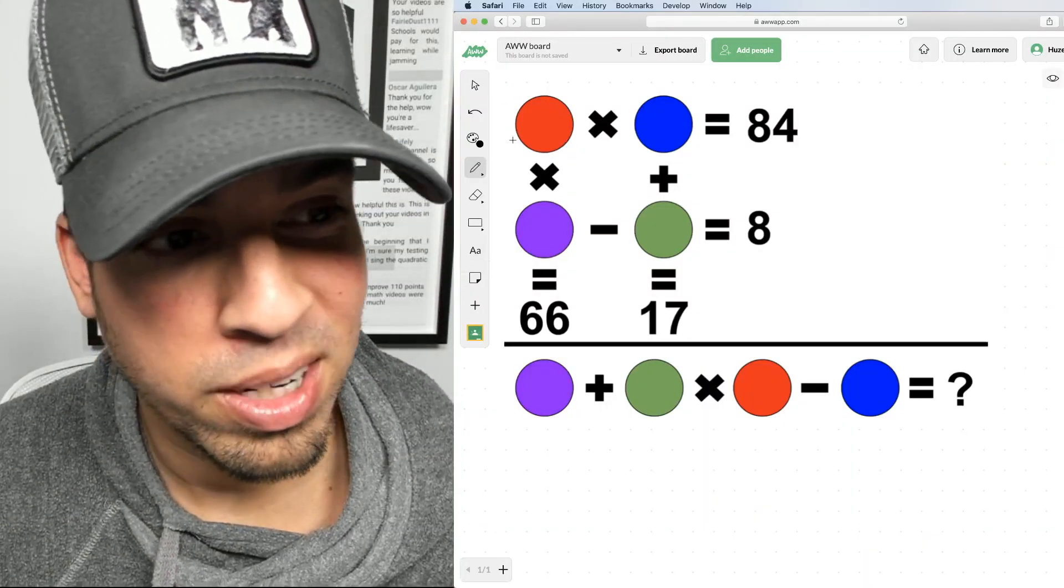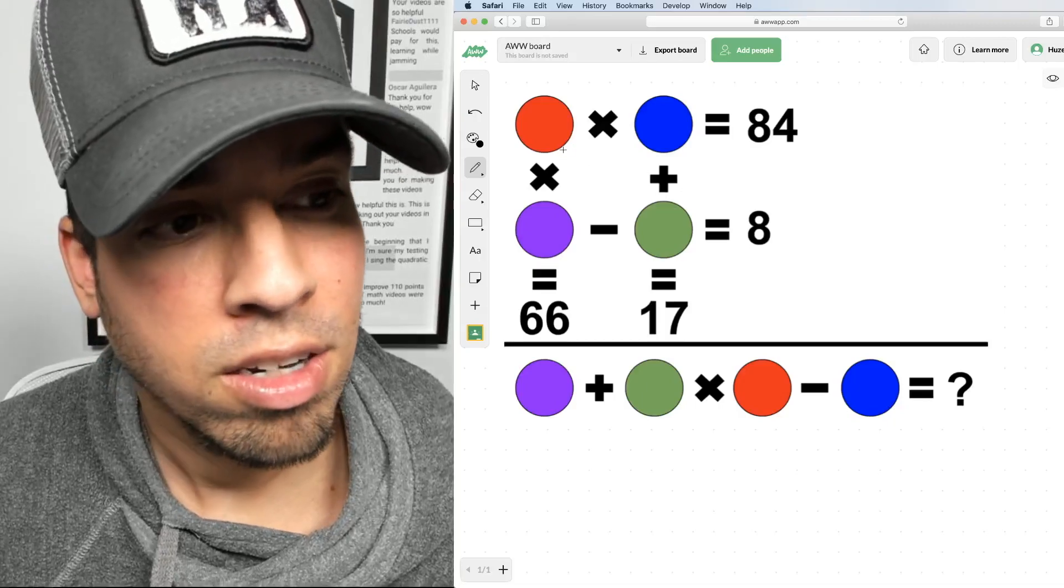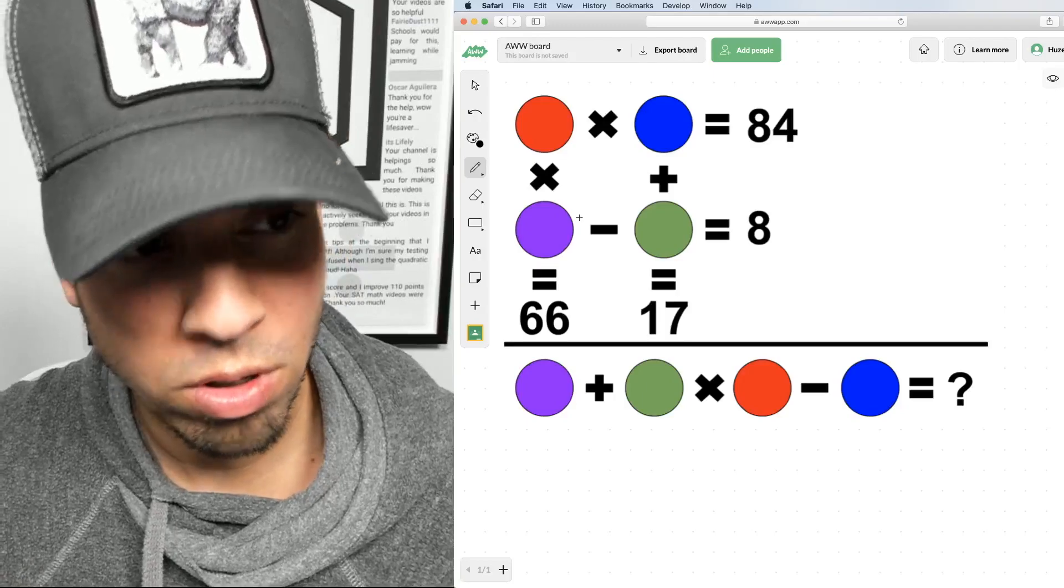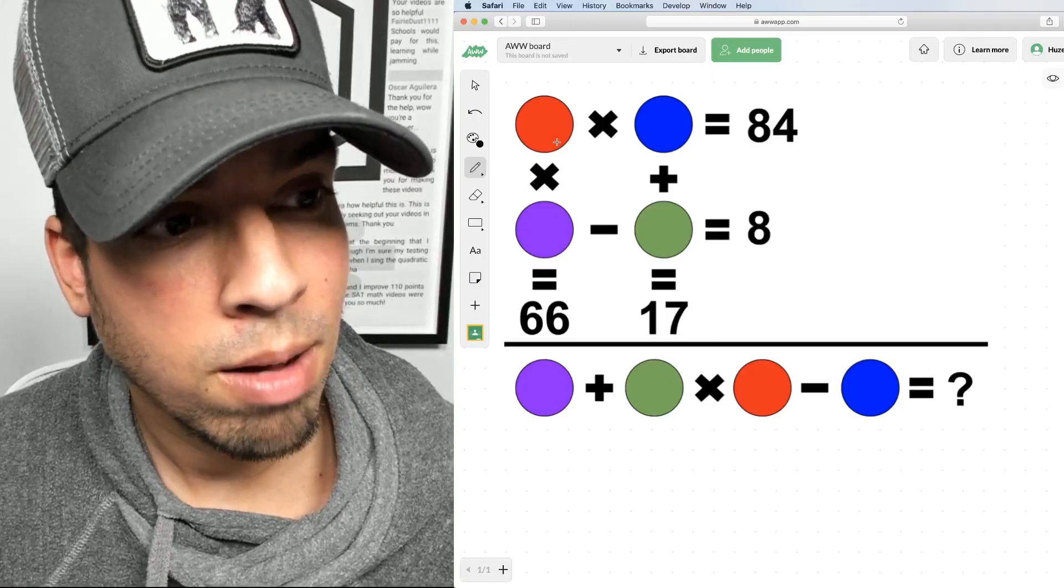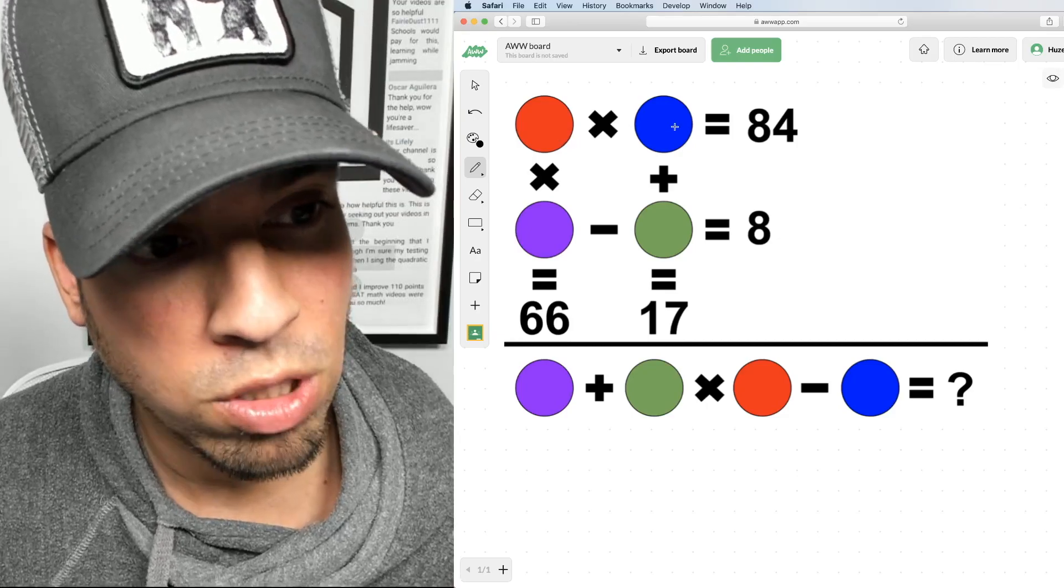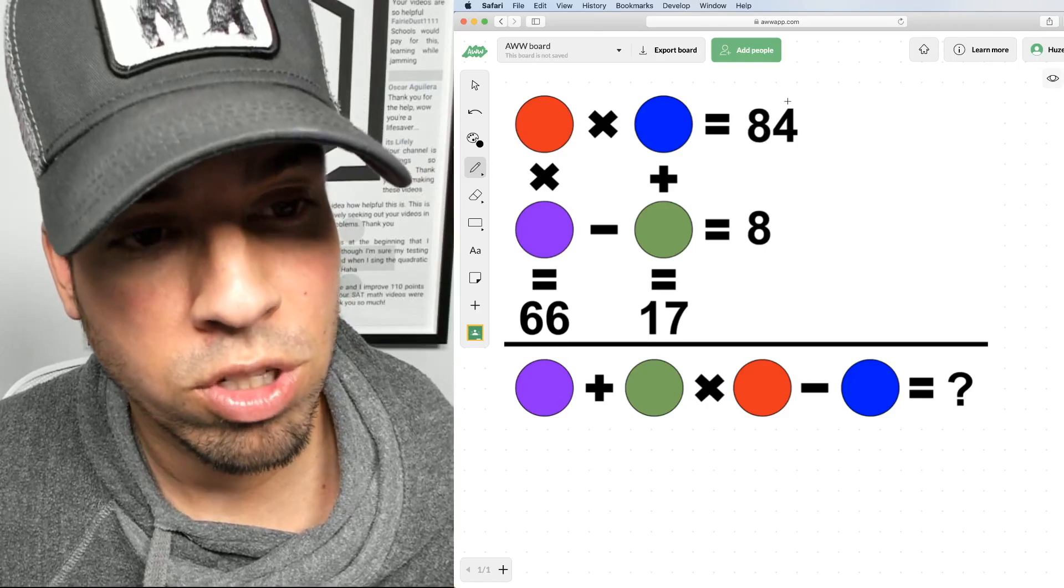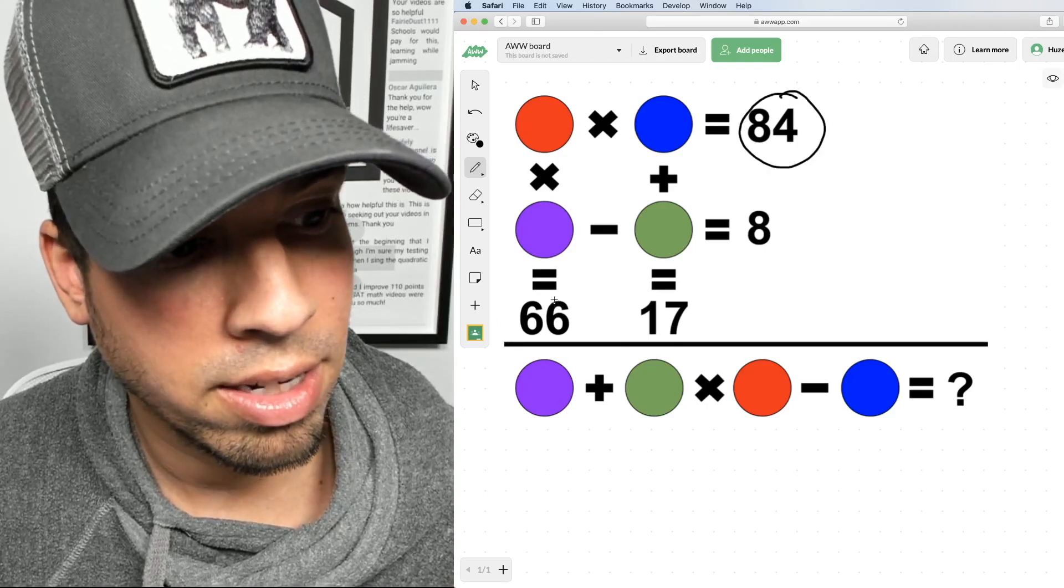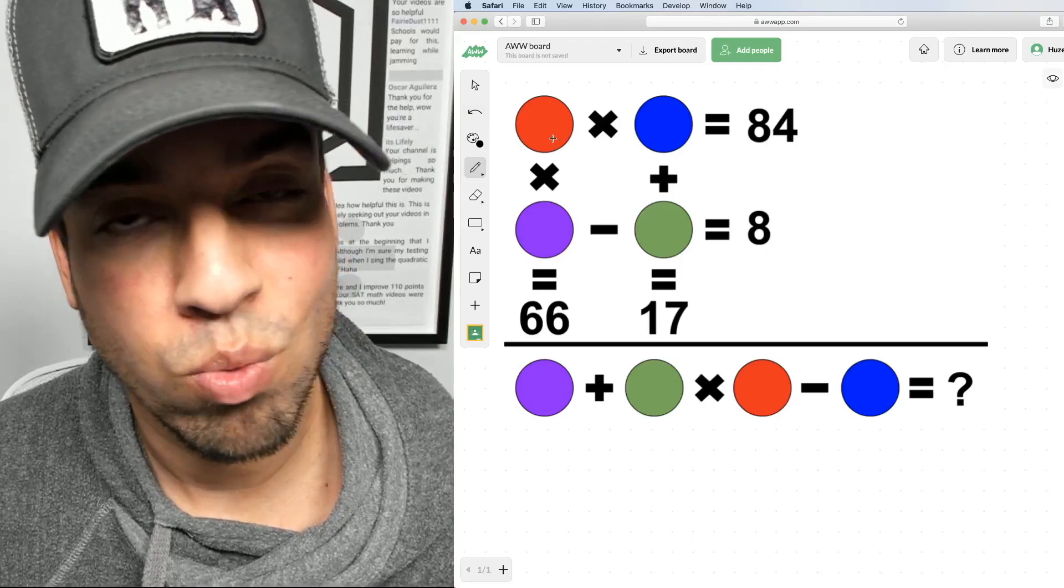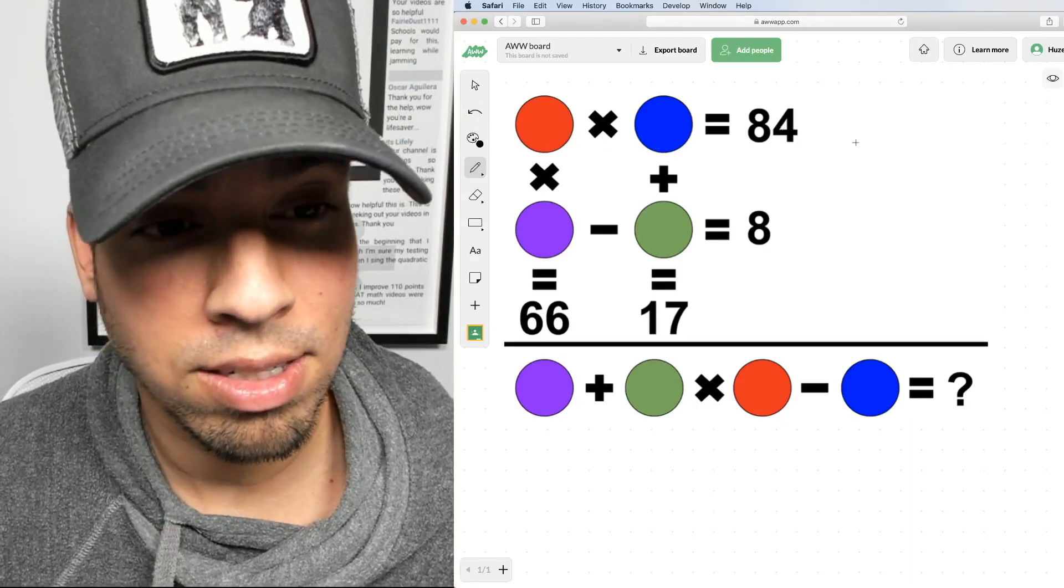Alright, here's how we do it. When we look at these equations, we want to look at two different equations simultaneously to see if we can limit our choices for some of these numbers. I'm looking at this red one and I noticed it's in two different multiplication problems. It's multiplying the blue and it's multiplying the purple, and the results are 84 and 66. That tells me that the red number must be a factor of both 84 and 66.